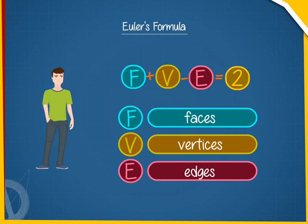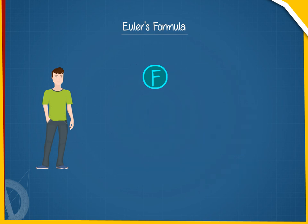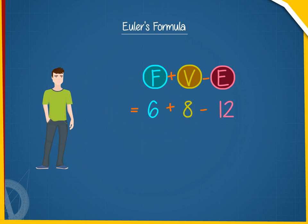This can be easily verified for each and every polyhedron. For example, in the case of a cube, F plus V minus E equals 6 plus 8 minus 12, which equals 2.